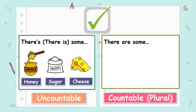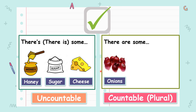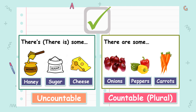We use there are some for countable nouns. For example, there are some onions — you have to put S. There are some peppers. And there are some carrots.